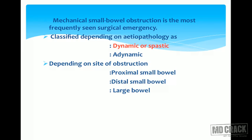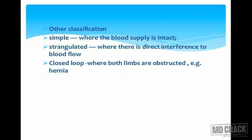Mechanical small bowel obstruction is the most frequently seen surgical emergency. It can be classified depending on etiopathology as dynamic or adynamic. Depending on the site of obstruction it can be classified as proximal small bowel, distal small bowel, or large bowel obstruction. Other classifications include simple obstruction where the blood supply is intact, strangulated obstruction where there is direct interference to the blood flow, and closed loop obstruction where both limbs are obstructed, as seen in hernia.